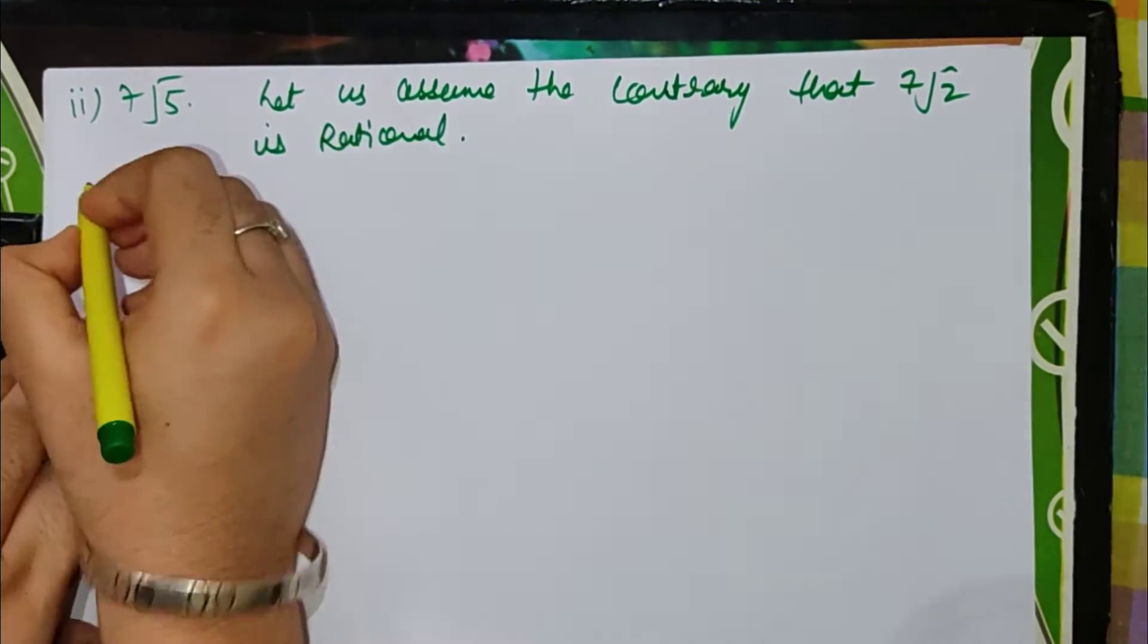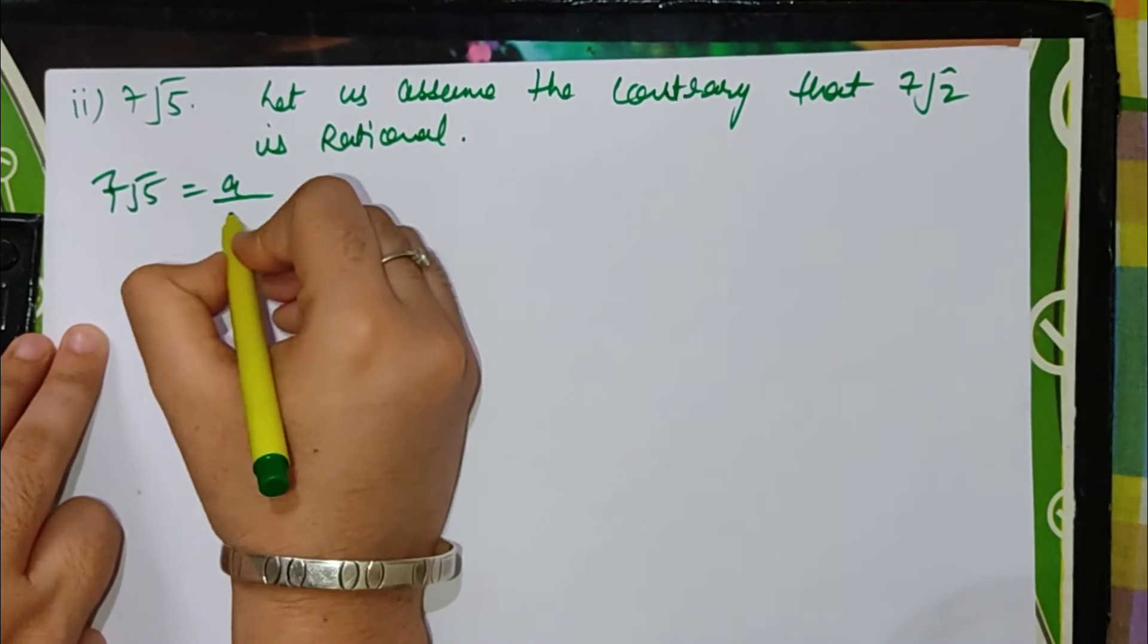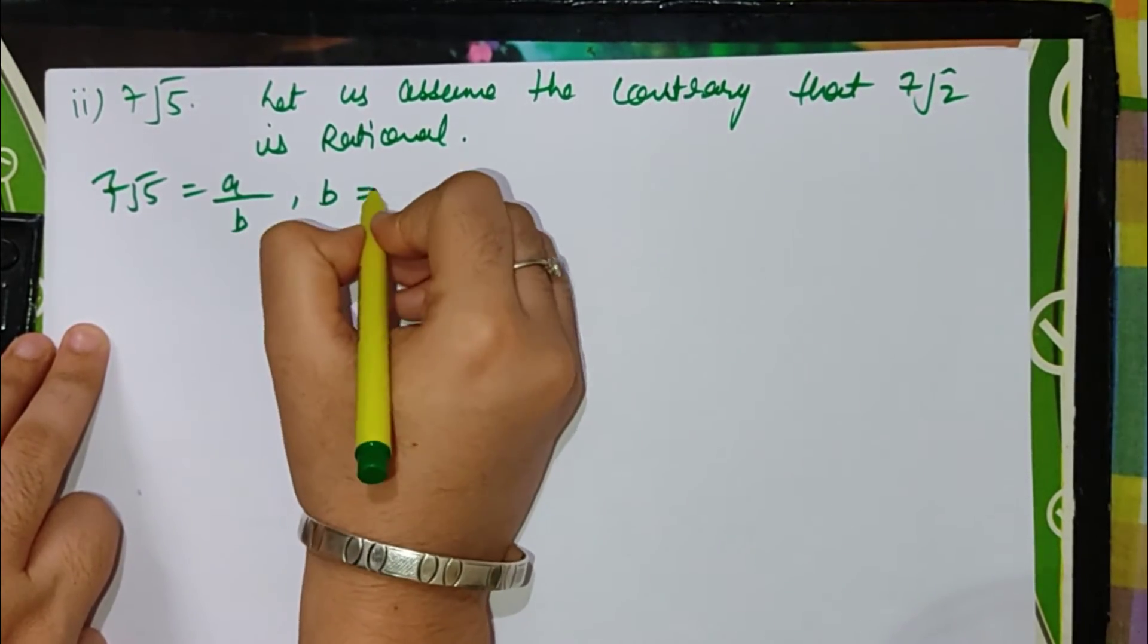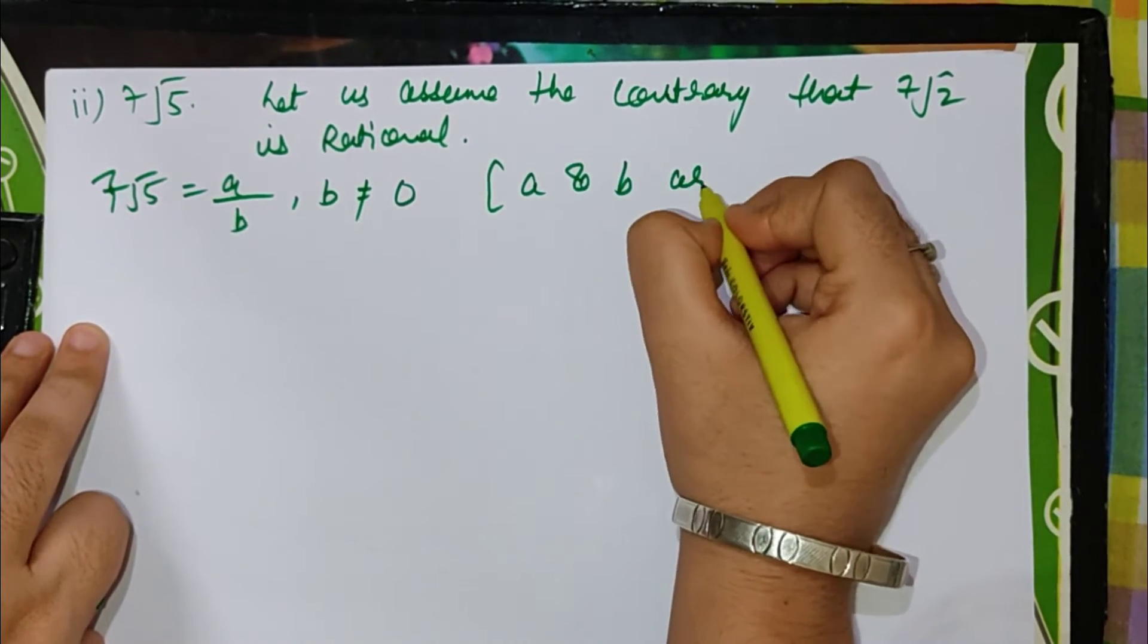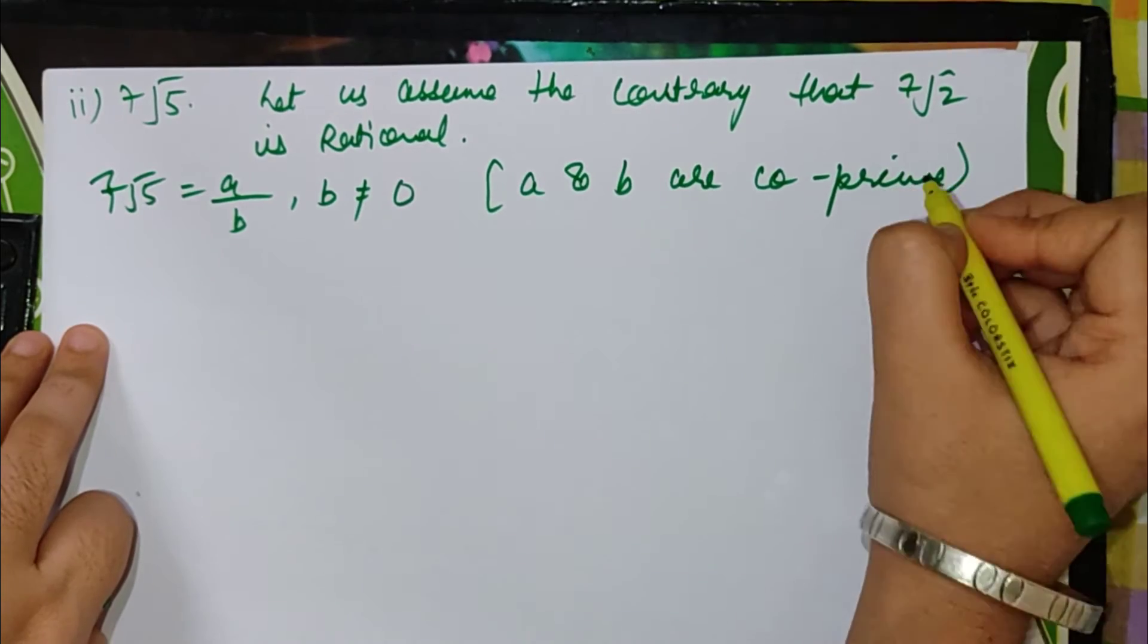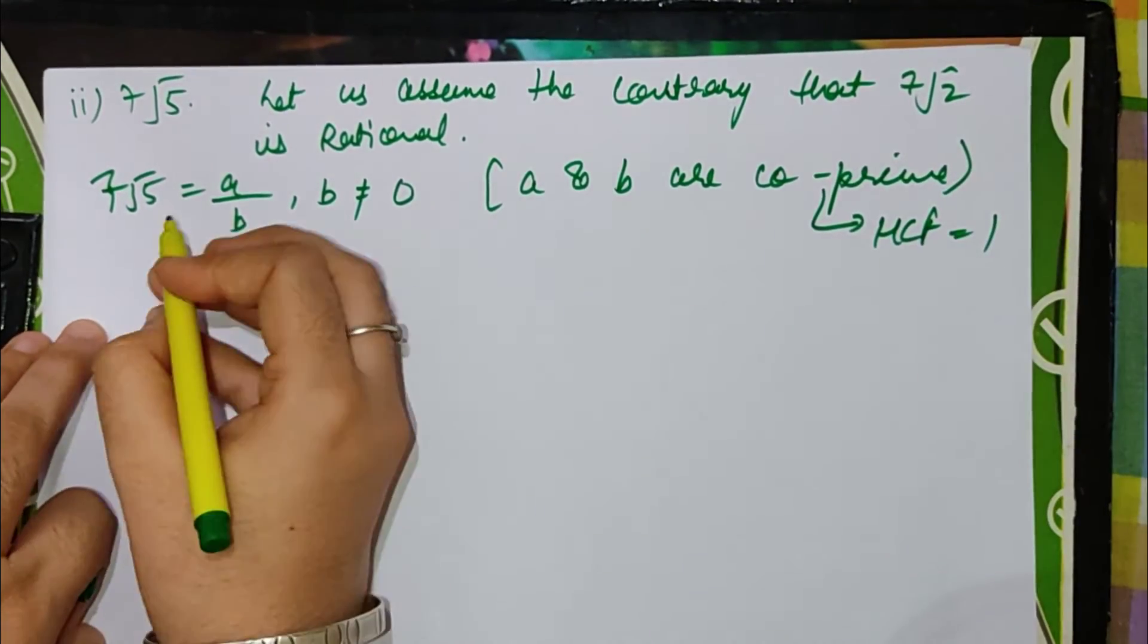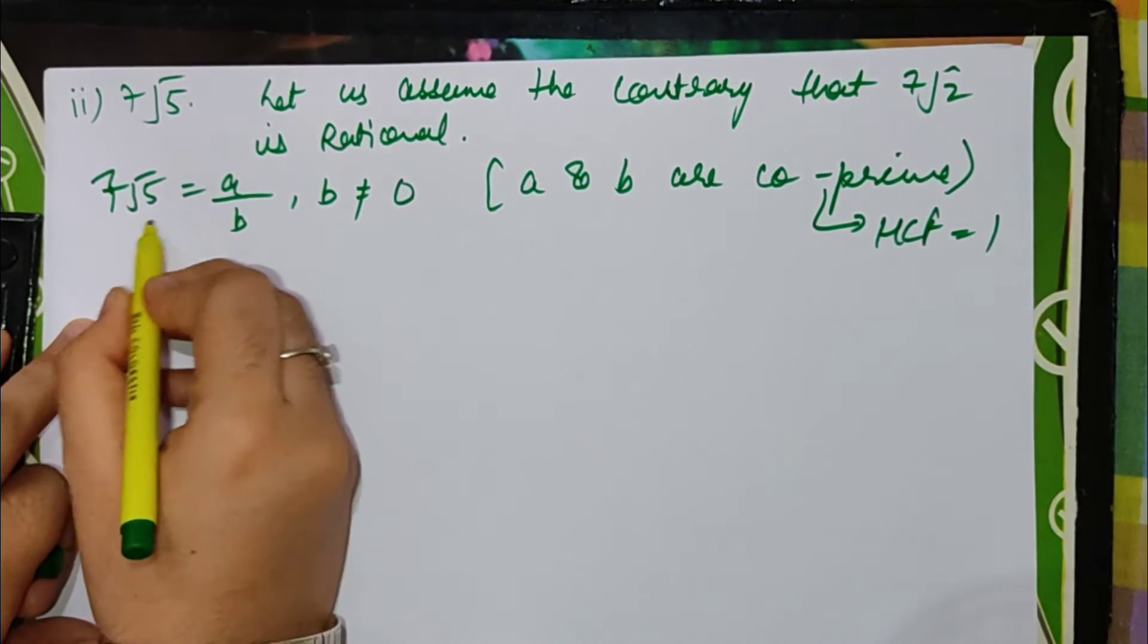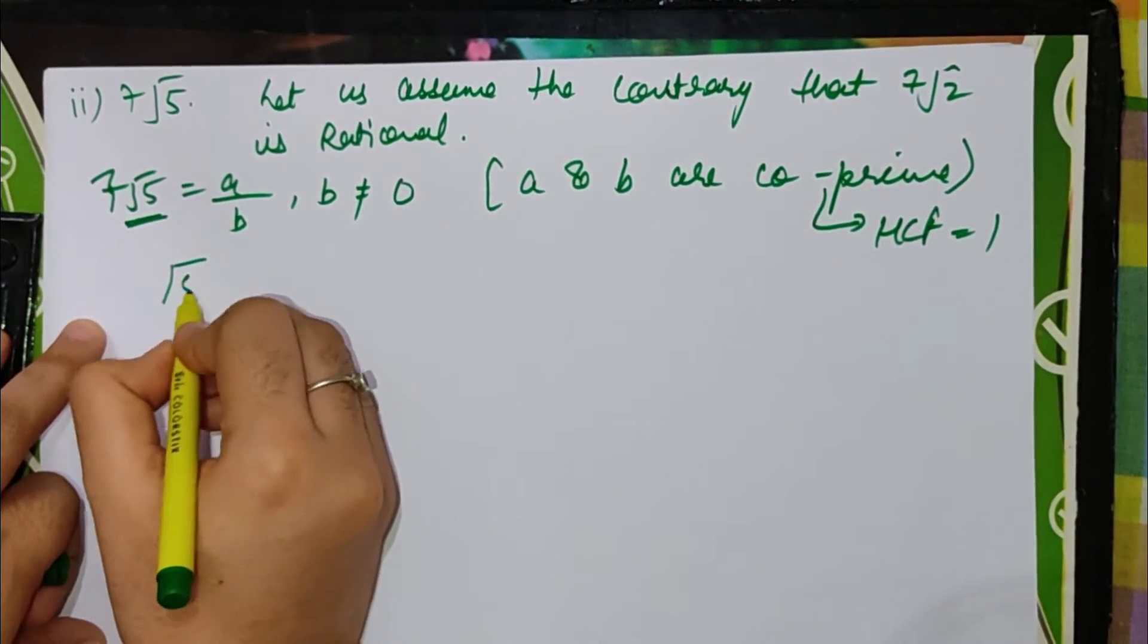This means that 7 root 5 is equal to a by b where b is not equal to 0, and a and b are co-primes. When we keep root 5 and put 7 to the other side, then we will divide by 7.